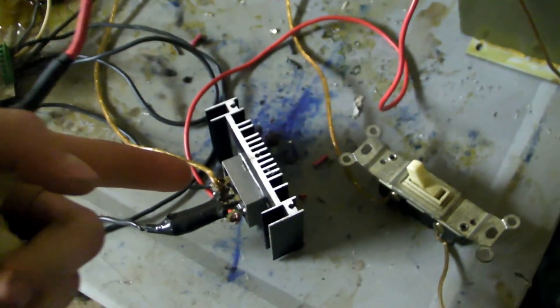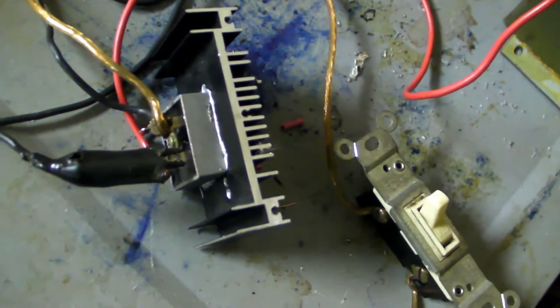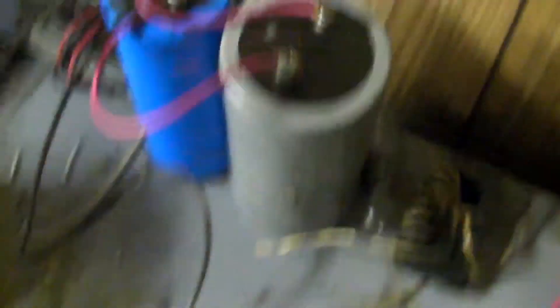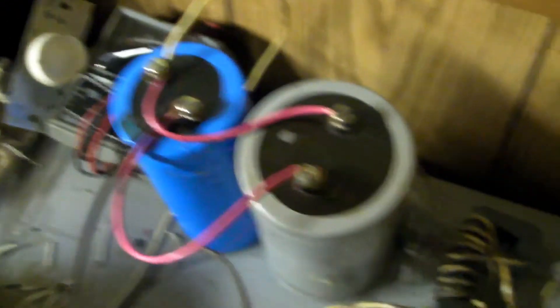And then once that gets rectified by this 50 amp, 1000 volt DC bridge rectifier, that goes into these two capacitors in parallel.